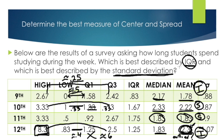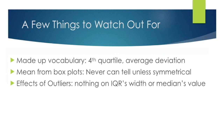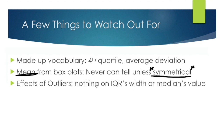A few key reminders: avoid made-up vocabulary such as '4th quartile' or 'average deviation' — if those appear as answer choices, eliminate them automatically. Also, you cannot get the mean from a box plot — the only exception is when the data is symmetrical, in which case the mean and median are exactly the same. Finally, outliers only affect the mean and standard deviation — they have no effect on the IQR or the median.